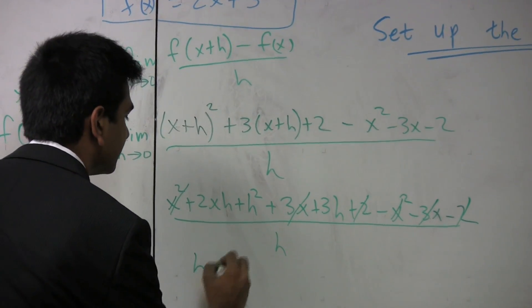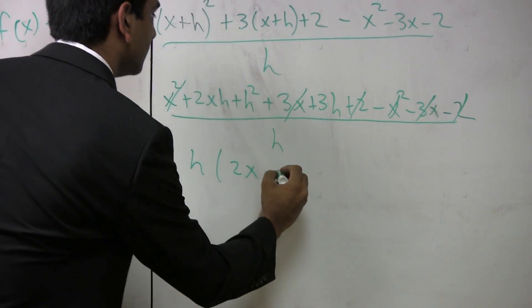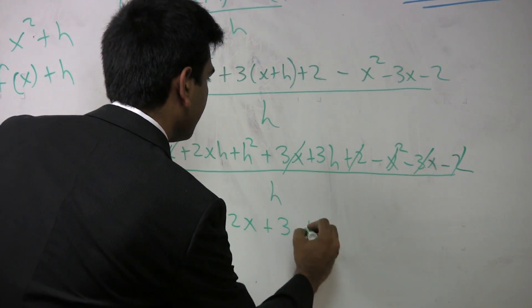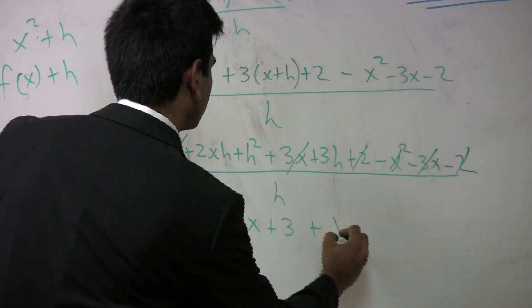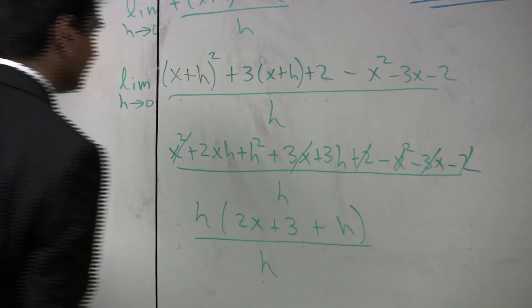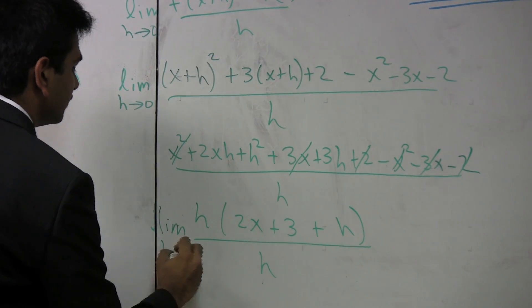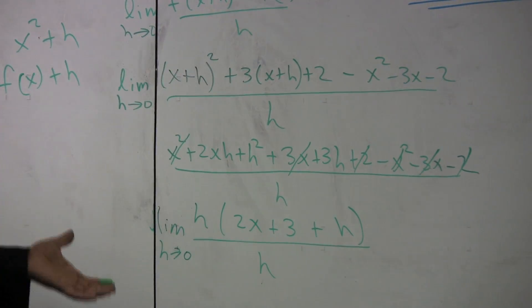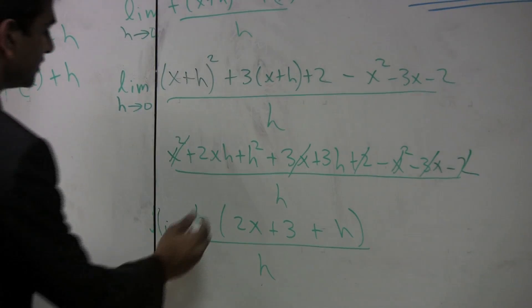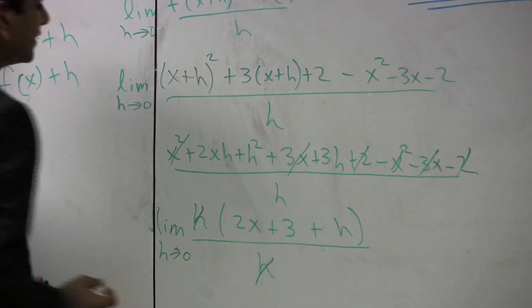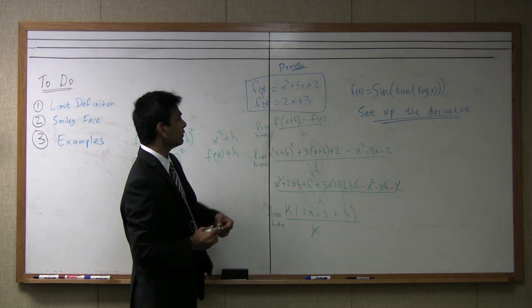So, this now becomes 2x plus 3 plus h. And this, of course, is the limit as h goes to 0. Now, as we can see, we can cancel out the h's, and we can plug in 0 in for h, and we can get that the derivative is 2x plus 3, which is what we wanted it to be.